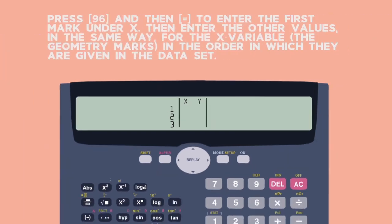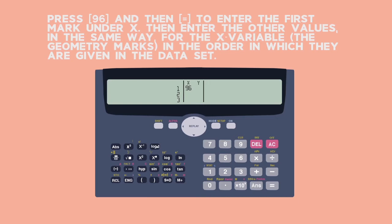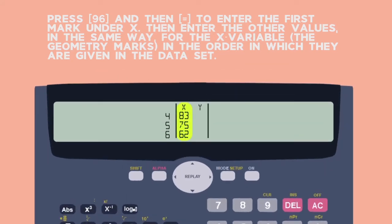Step 2. Enter the data. Press 96 and then the Equals button to enter the first mark under X. Then enter the other values in the same way. For the X variable, the geometry marks in the order in which they are given in the data set.